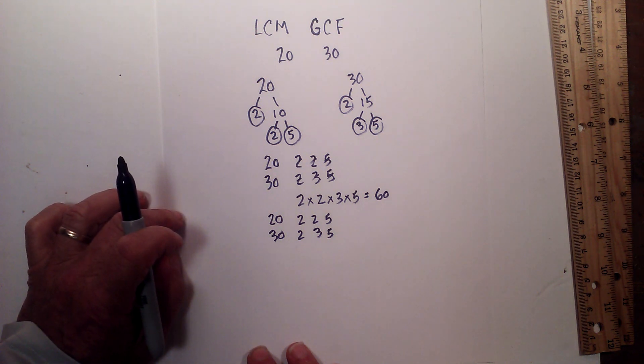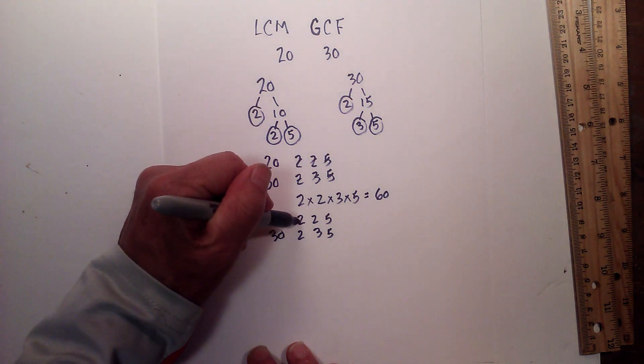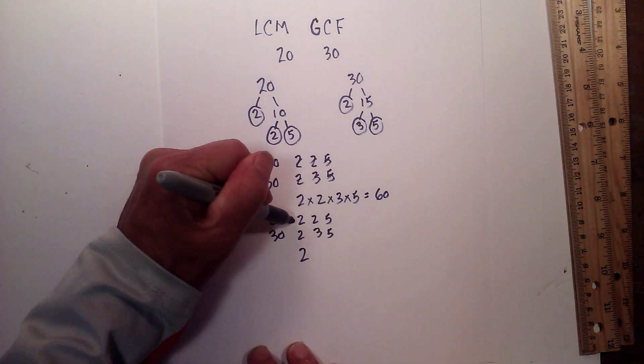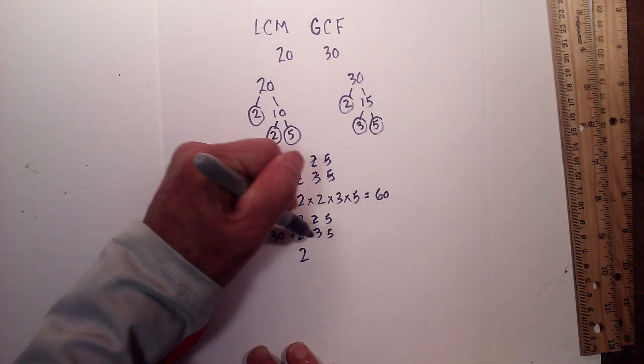And so we have 2 because notice it's in both numbers. This 3 is not in both numbers, and the 5 is in both numbers. So 2 times 5 is 10.